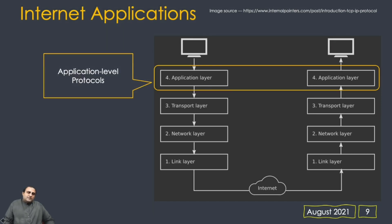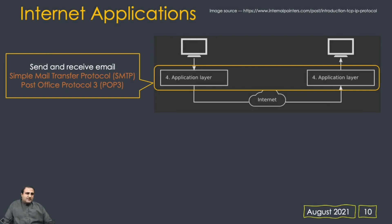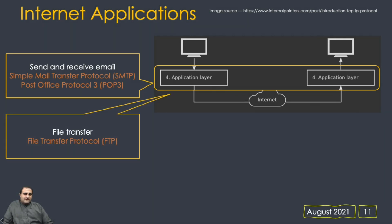Once we have the internet enabled, we can write applications utilizing it. We have application-layer protocols — for each internet application we can have unique application-layer protocols. For example, to send and receive emails we have specific protocols responsible for that. Similarly, we can have transfer of files from one machine to another, and we have protocols that enable file transfer between machines.